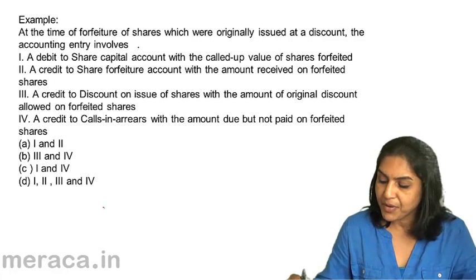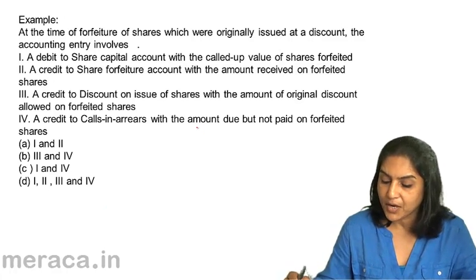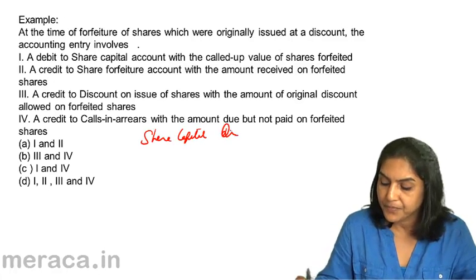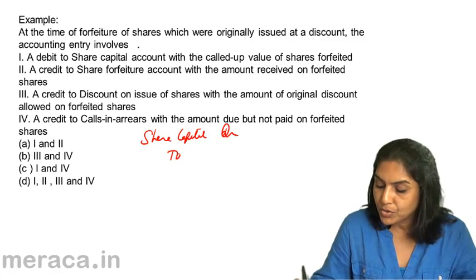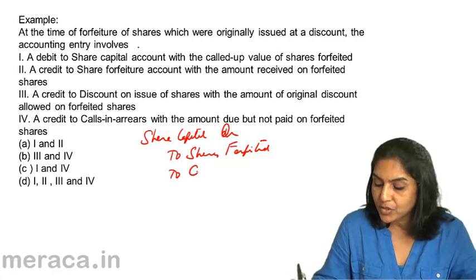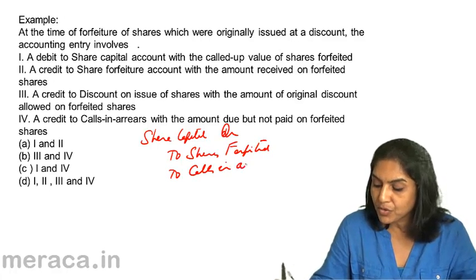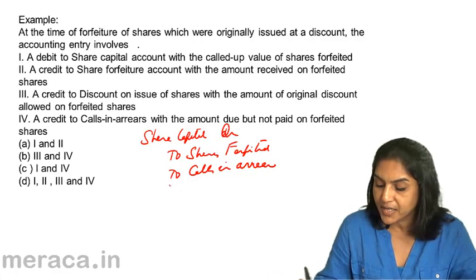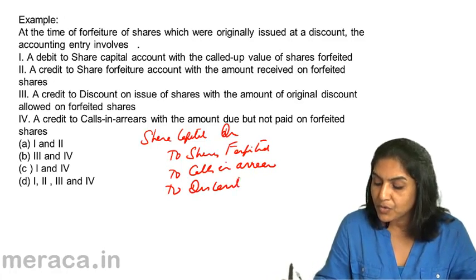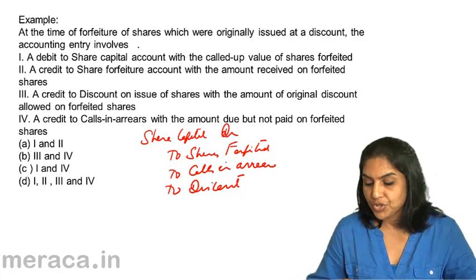Let us quickly frame the accounting entry. Share capital account would be debited with the called-up value. To shares forfeited — with the amount collected. To calls in arrears — with the amount not collected. To discount on issue — with the amount of discount on original issue.